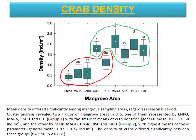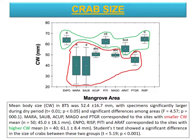The density of crabs differed significantly between these two groups. Mean crab size in BTS was 52.4 mm, with specimens significantly larger during the dry period and significant differences among areas. Circled in red are the sites with smaller body size, and circled in green are the sites with the larger body size. Student's t-tests showed a significant difference in size of crabs between these two groups.